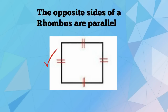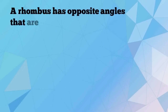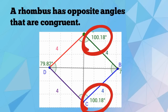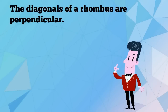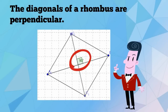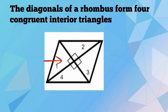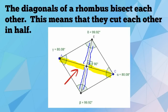The opposite sides of a rhombus are parallel. A rhombus has opposite angles that are congruent. The diagonals of a rhombus are perpendicular. The diagonals of a rhombus form four congruent interior triangles. The diagonals of a rhombus bisect each other — this means they cut each other in half.